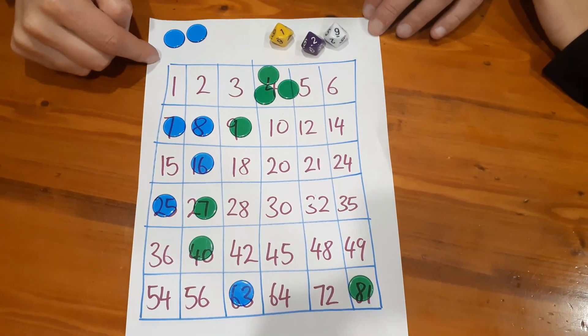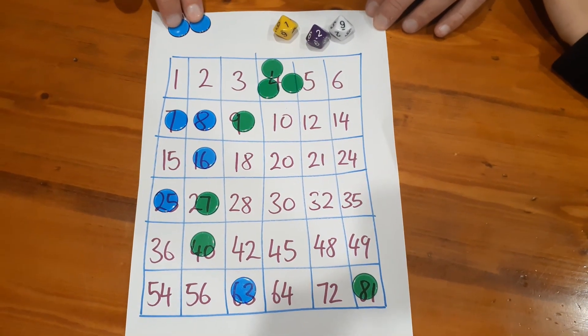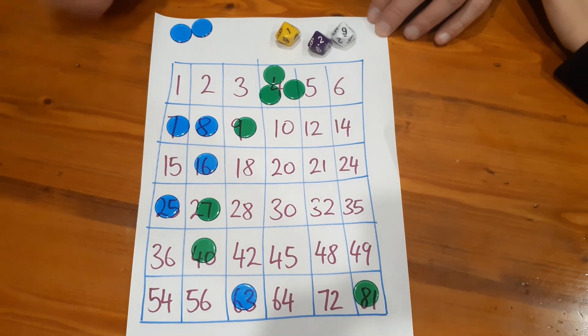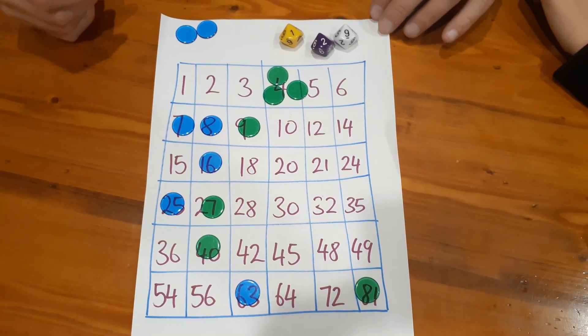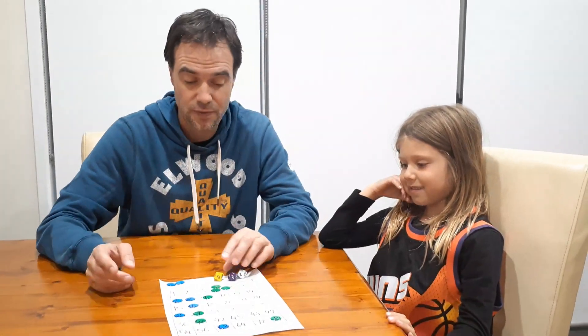As you can see Nash has won the game because I've still got my two blue counters left, he's got rid of his seven green counters. So that is Get Out of My House version 3.0, which is the multiplicative version.